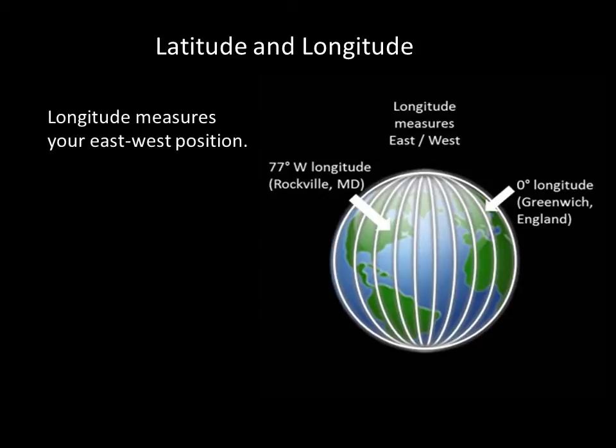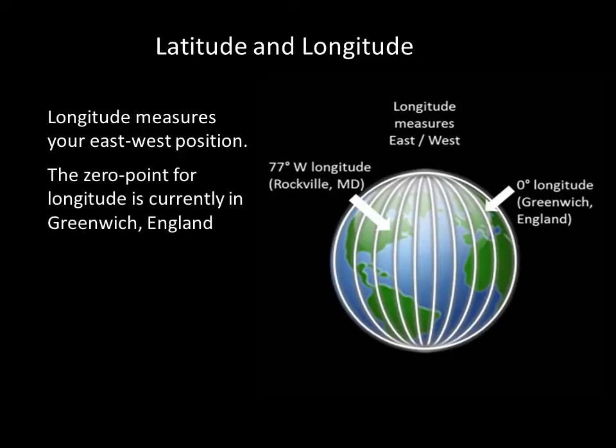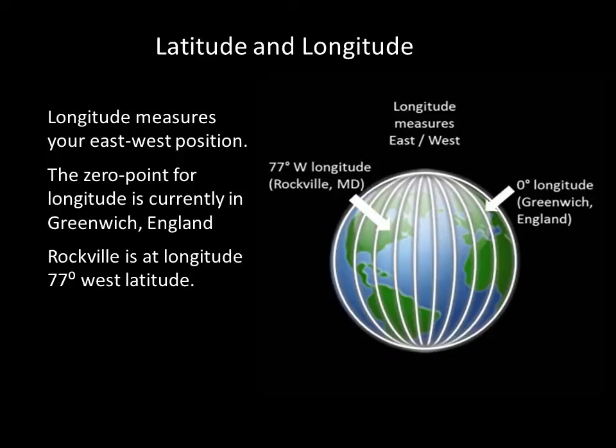The coordinate of longitude measures your east-west position on the globe. The zero point for longitude is arbitrary, and over the course of history it has resided in numerous different countries. Today we take zero degrees longitude to be in Greenwich, England. Moving east from Greenwich increases your longitude — Hong Kong, for example, is at a longitude of 114 degrees east. Longitude increases until you reach 180 degrees east at the opposite side of the world from Greenwich. If you had instead started walking west from Greenwich, your longitude would increase in the negative direction. Traveling west to Rockville, Maryland puts you at minus 77 degrees longitude, or 77 degrees west.